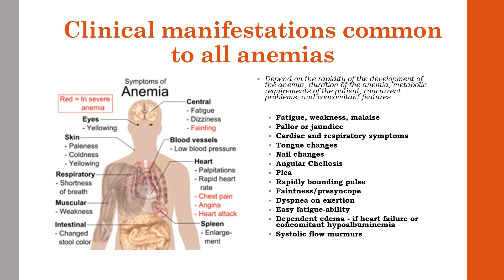In general, the quicker the anemia develops, the more severe the symptoms will be. Whereas when anemia develops over months — for example, when women have heavy menses — sometimes they'll be asymptomatic or have only vague symptoms before we diagnose them. Complications of severe anemia can include heart failure, paresthesias, and delirium.